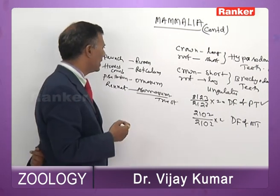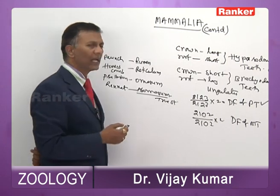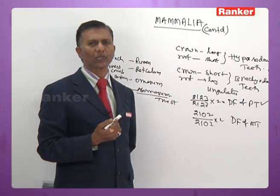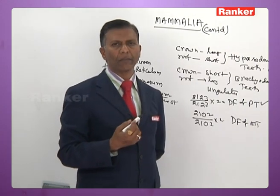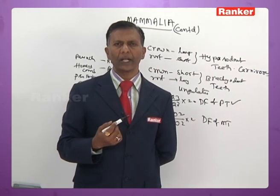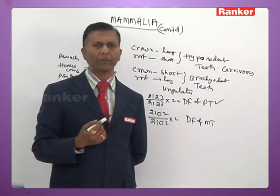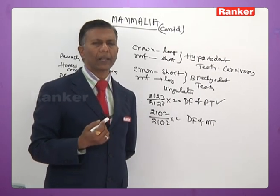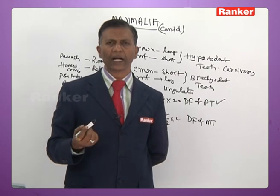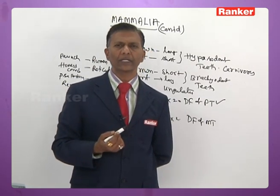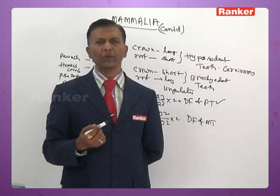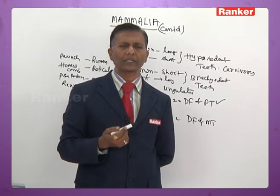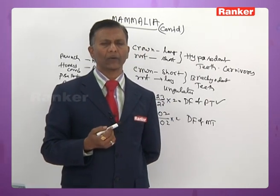The rumen and reticulum both help in digestion of cellulose by harboring certain symbiotic bacteria. In mammals alone, in the intestinal region, a diffused type of lymphoid tissue is present — called Peyer's patches — found exclusively in mammals, not in other vertebrates.